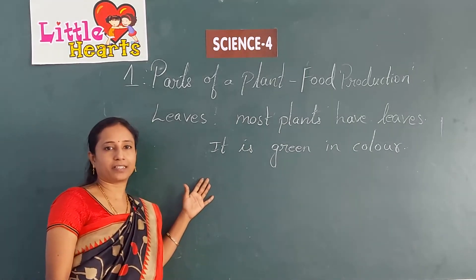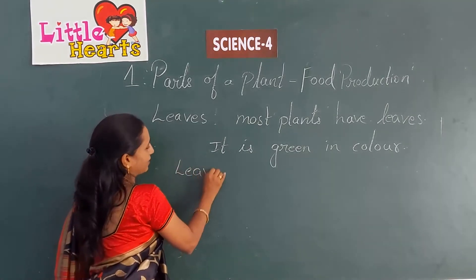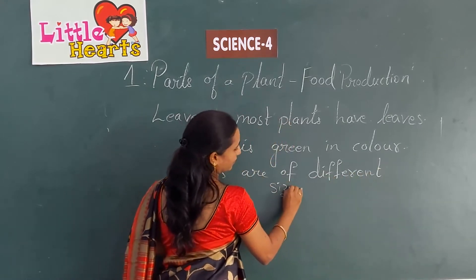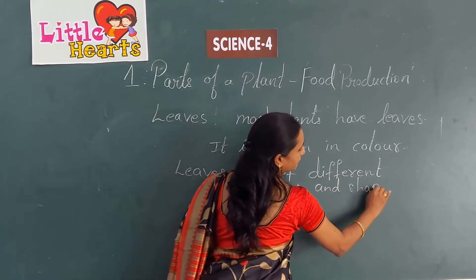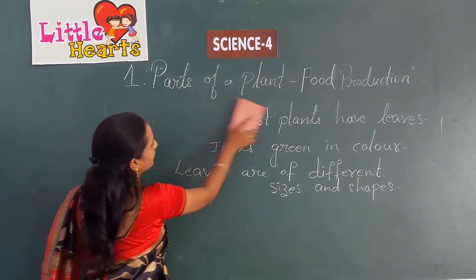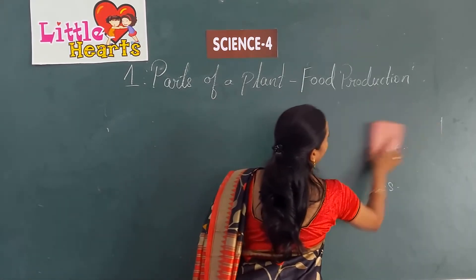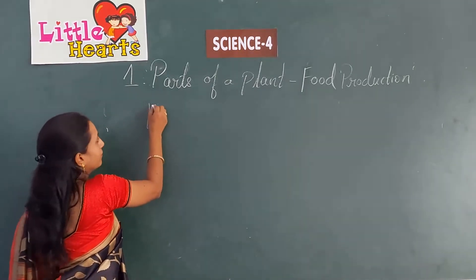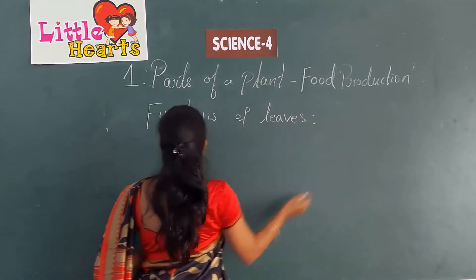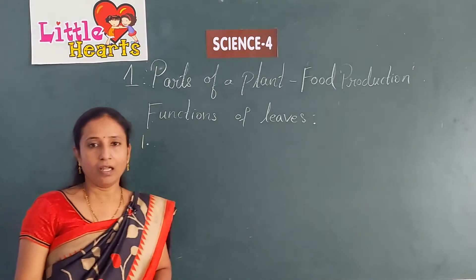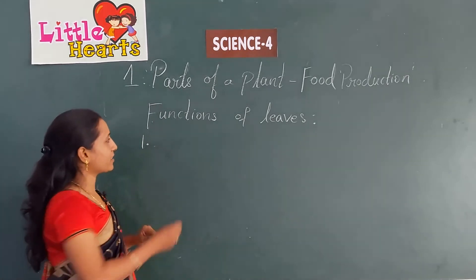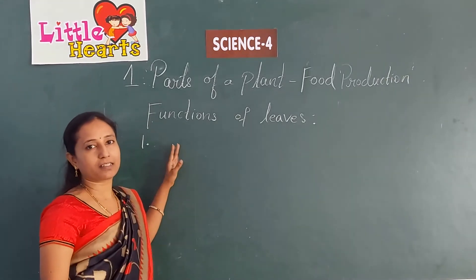Different kinds of plants have different kinds of leaves — they have different sizes and different shapes. Now let's discuss the functions of leaves. The main function of the leaf is that leaves prepare food for the plant. The process by which leaves prepare food is known as photosynthesis.